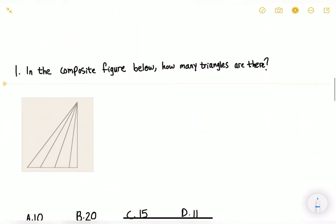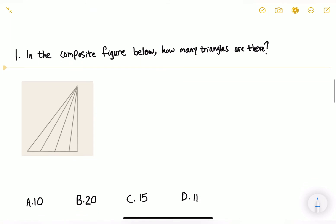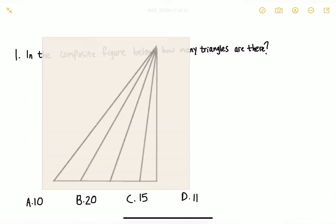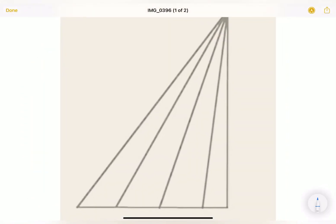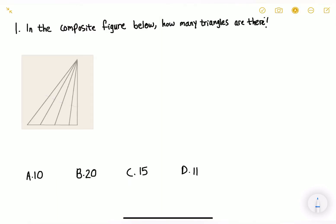Now let's apply what we learned. I want you guys to pause this video and attempt to do this problem yourself. The question says: in the composite figure below, how many triangles are there? All we have to do is count the number of lines first. We have one, two, three, four, five lines.